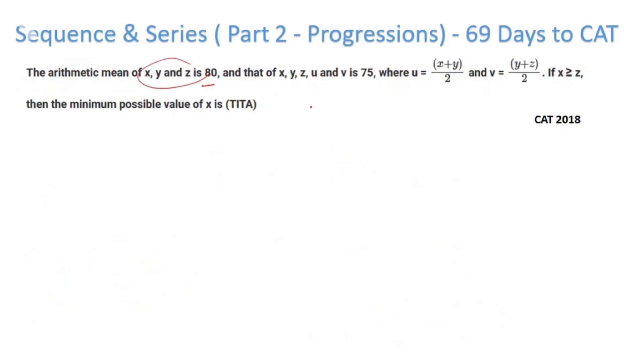What is the sum? 51 × 75. If I put it here, this becomes 75 - 52, that is 23. That's CAT 2018 for you. The arithmetic mean of x, y, z is 80, so x + y + z = 240. That's the arithmetic mean. x, y, z, u, v is 75, so x + y + z + u + v = 5 × 75 = 375.